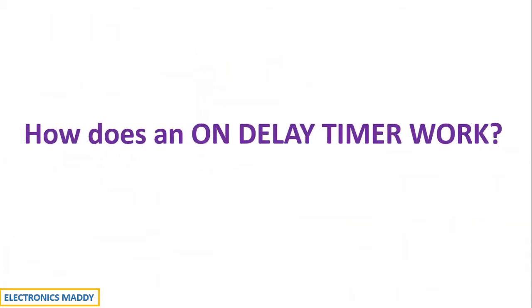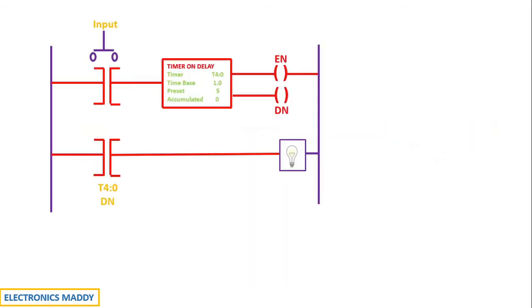So this is all about the basic terminologies that are associated with on delay timer. Having said that, now, how does an on delay timer work? So the working of on delay timer is pretty simple and straightforward. Let us consider a typical example. Now, if you carefully observe, I am having a lighting load over here and I'm using the same address of this on delay timer and the address is chosen to be equal to the done bit. So the concept of enable and done bit is very important here and I'll be explaining it clearly.